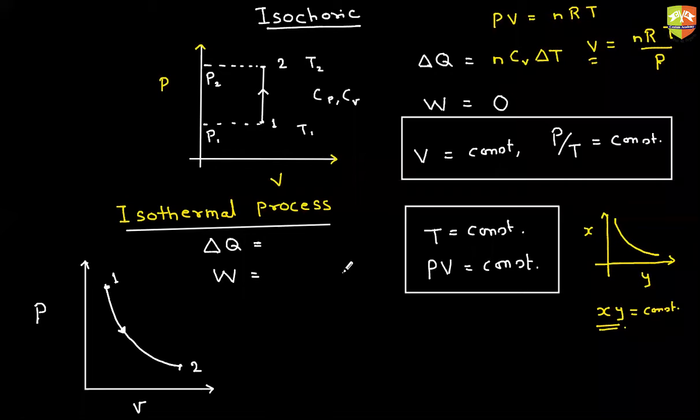Subconsciously we think delta T should be there. If delta T is there, then only heat will be supplied. What if whatever heat you supply, entire heat got converted into work? If entire heat got converted into work, internal energy doesn't change. The kinetic energy doesn't change. Because of that, the temperature doesn't change.